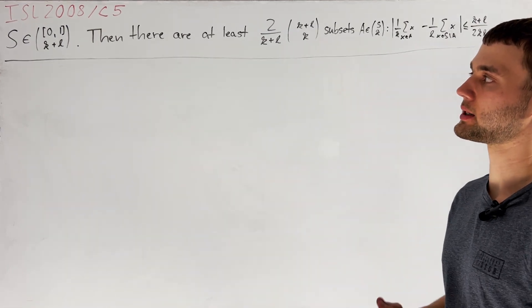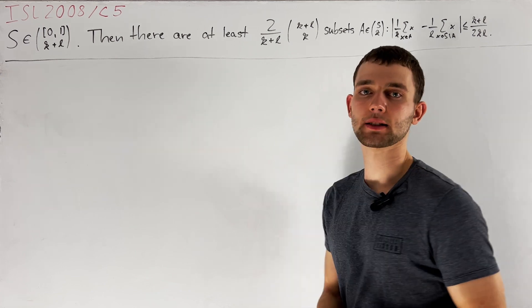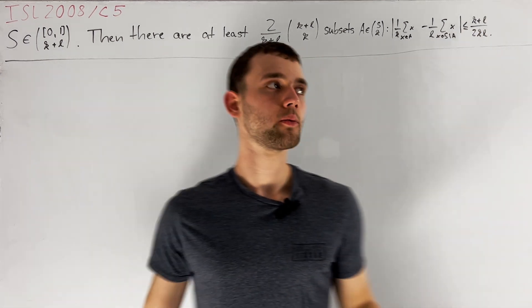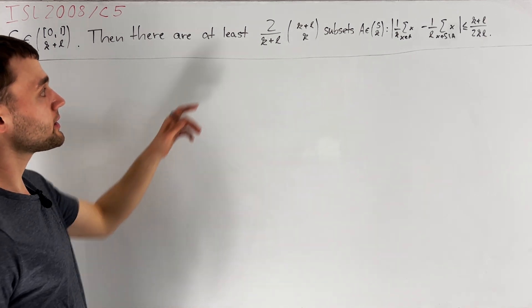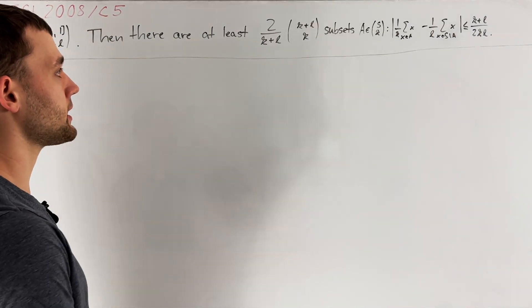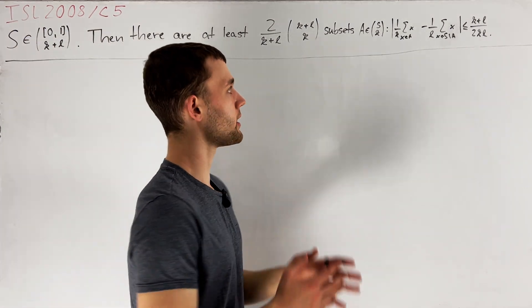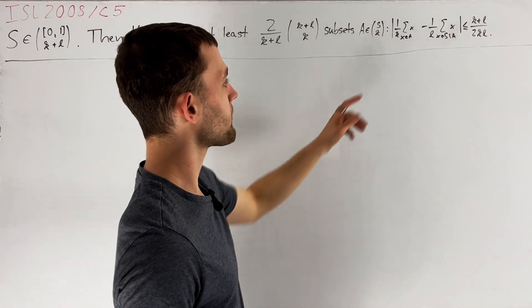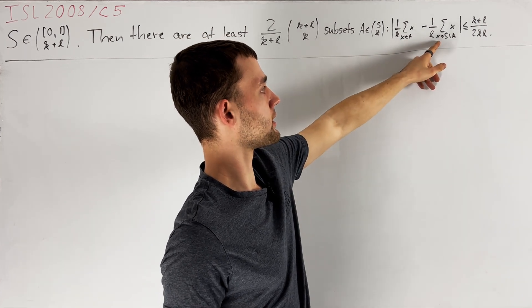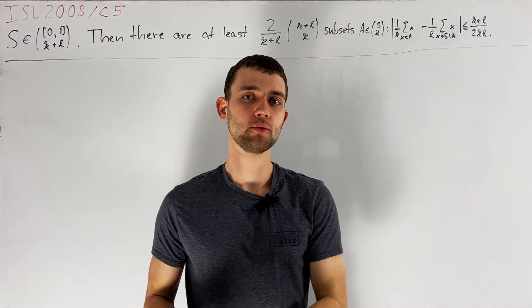We have given a subset S of the closed interval 0 to 1 of size K plus L, where K and L are positive integers. We want to prove that there are at least 2 over K plus L times K plus L choose K subsets A of S with size K, such that the absolute difference of the average of elements in A and the average of elements in S minus A is at most K plus L divided by 2KL.